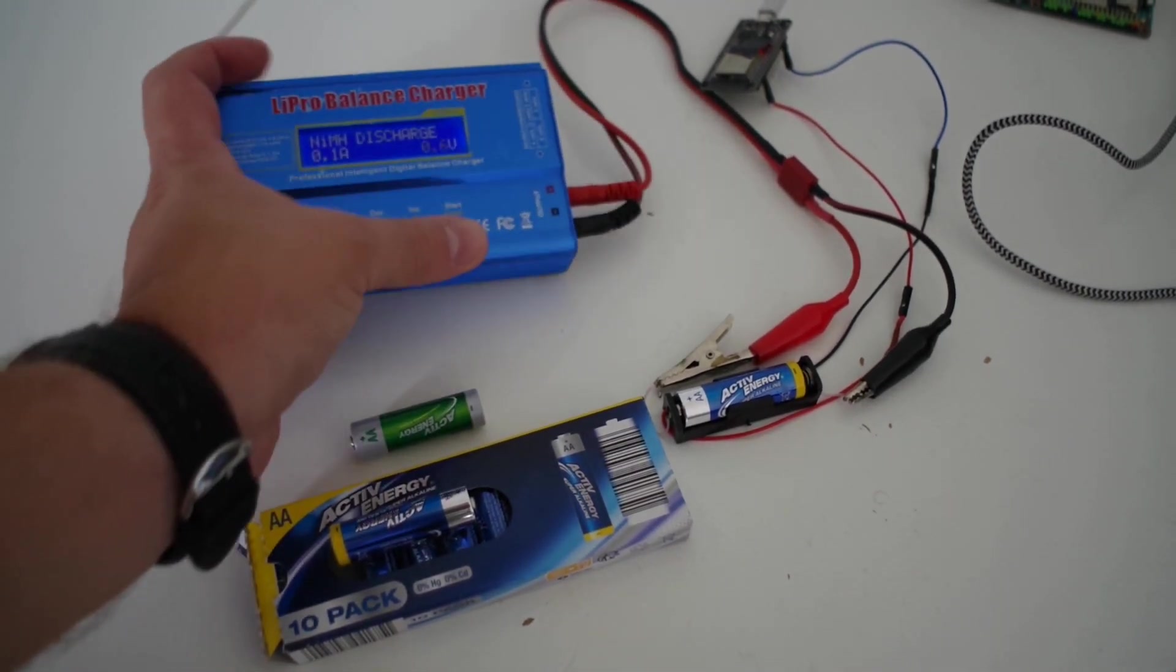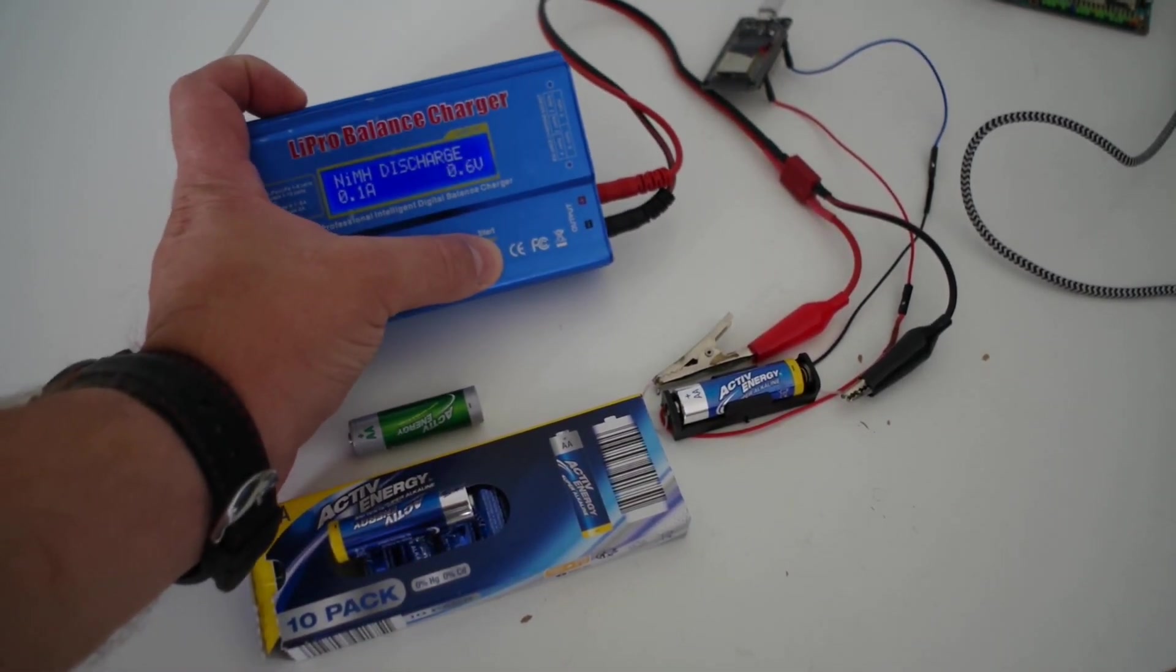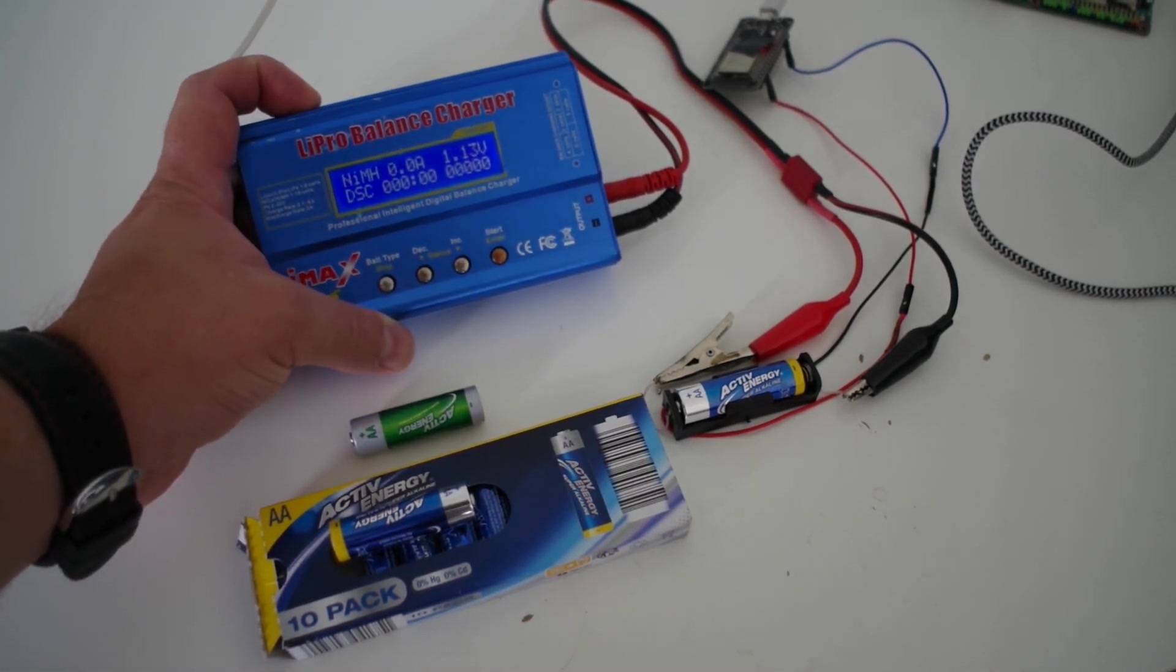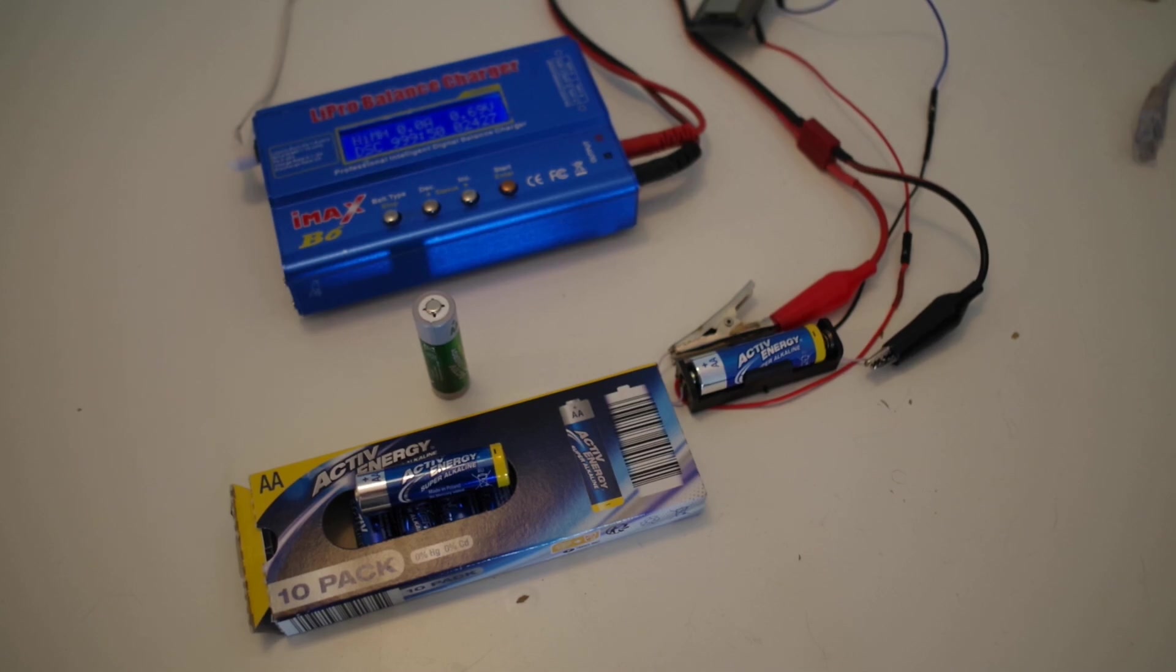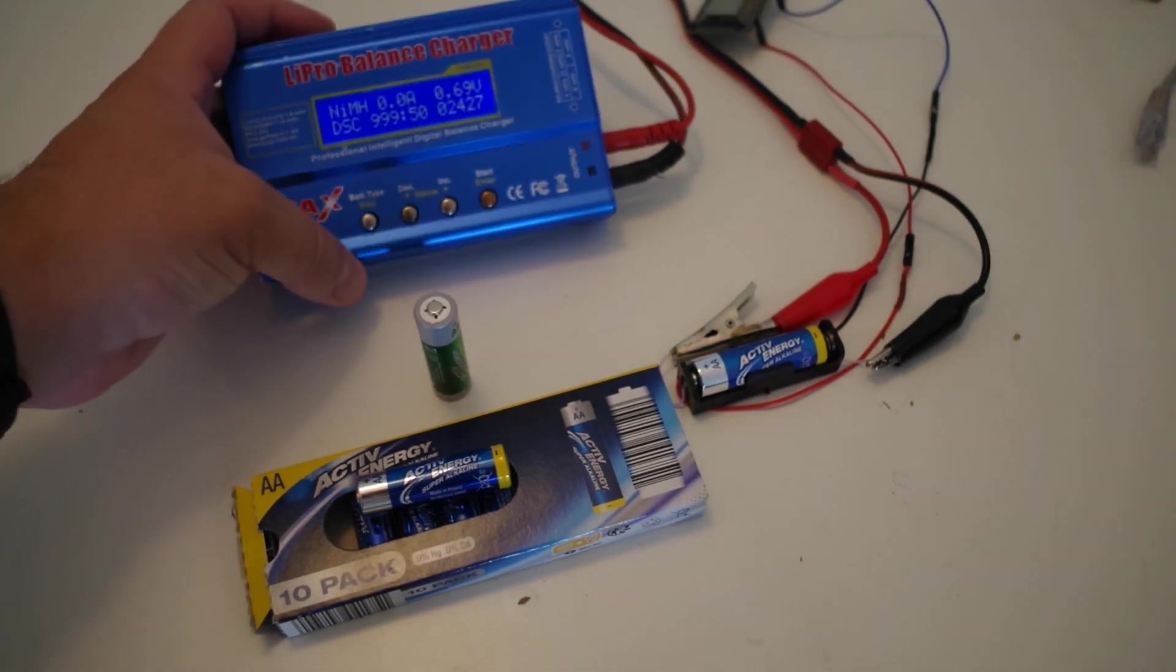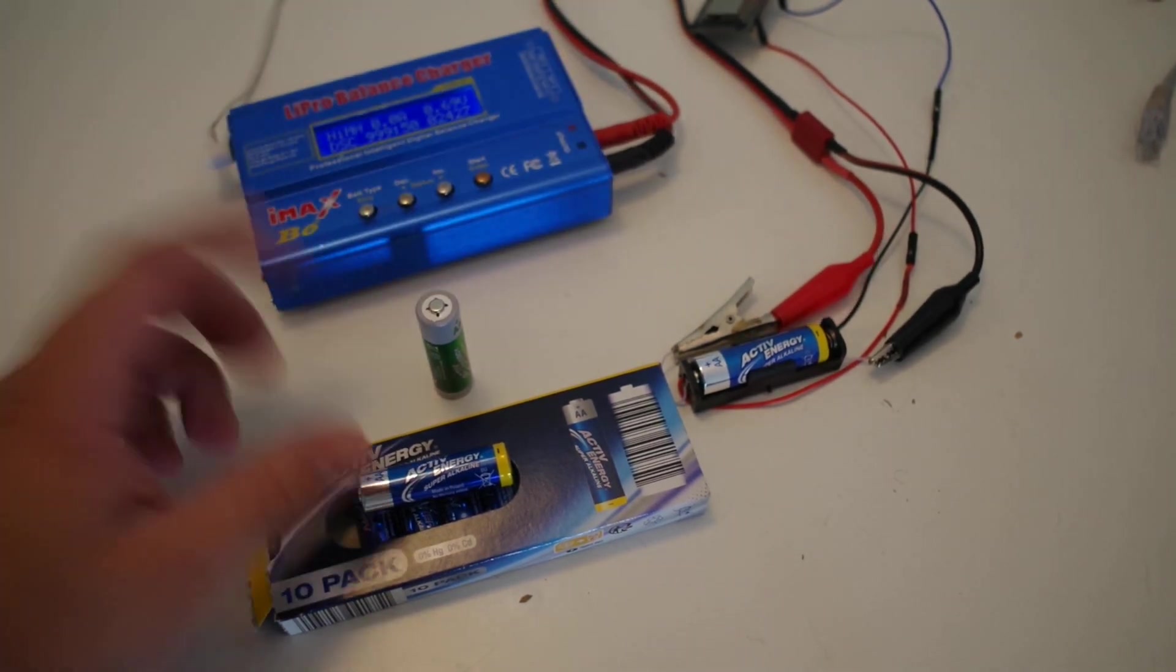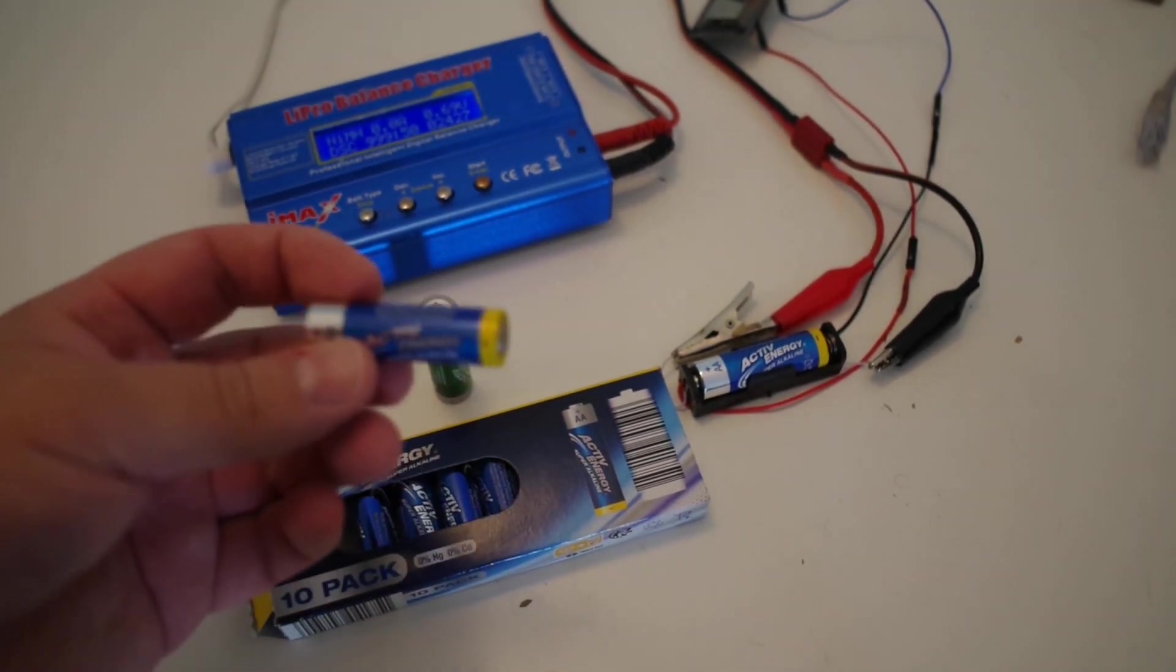0.1 amp current, let's go. 0.1 amp discharge is finished. You can see capacity here. Let's check next one with 0.2 amps.